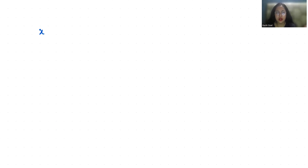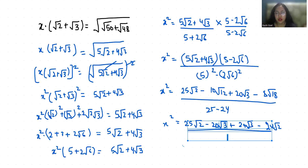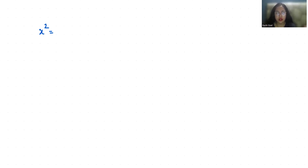So x² equals — we can cancel out the positive and negative 20√3. That leaves us with 25√2 minus 24√2, so x² equals √2.